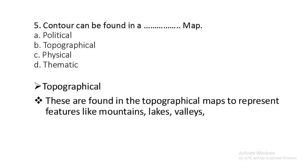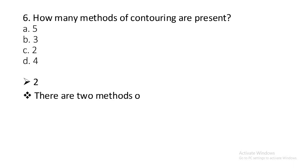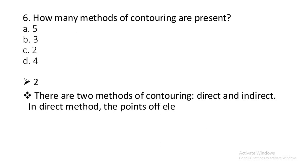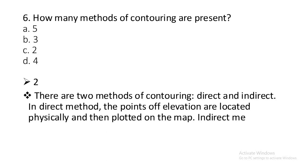Question number six: How many methods of contouring are present? Five, three, two, or four? There are two methods of contouring: direct method and indirect method. In the direct method, the points of elevation are located physically and then plotted on the map, while indirect method uses contouring with the help of grids.